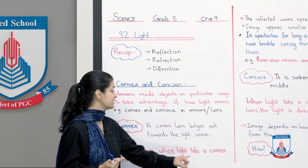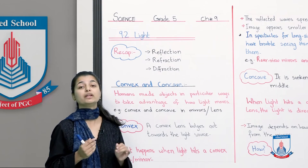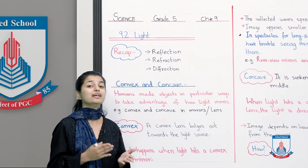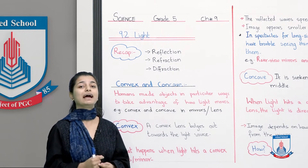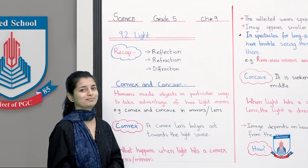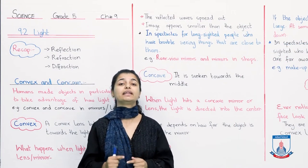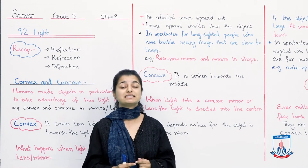What happens when light hits a convex lens or a mirror? Now the question is, how does the convex lens affect the light? How does it make light react? To understand that, we'll now move to the second board. Over here we have it written how light reacts when it hits a convex lens.